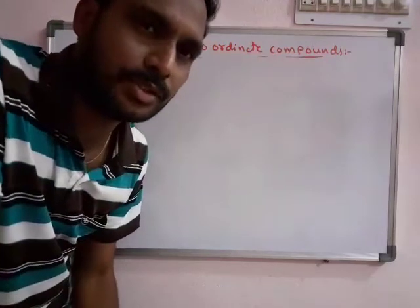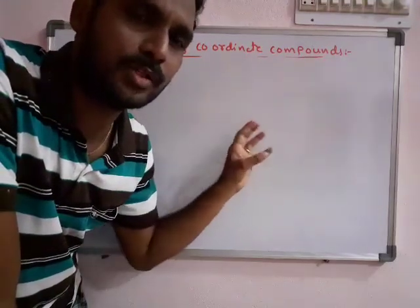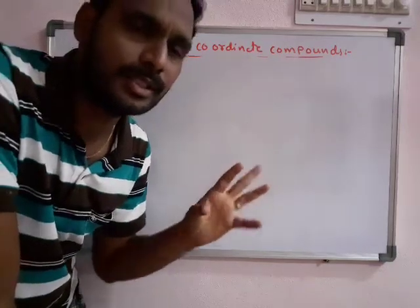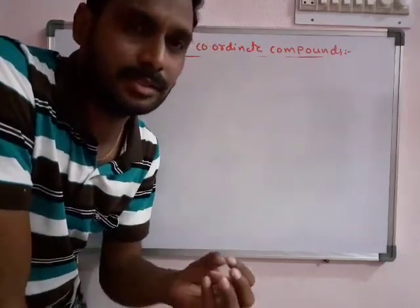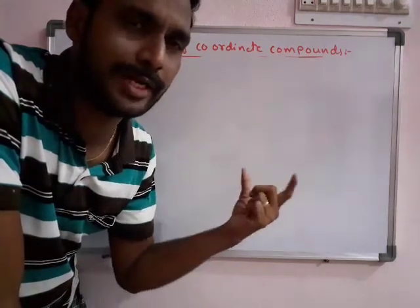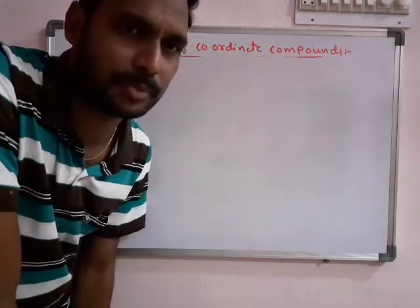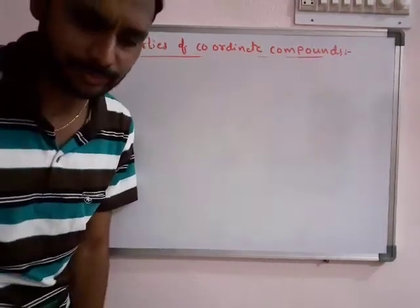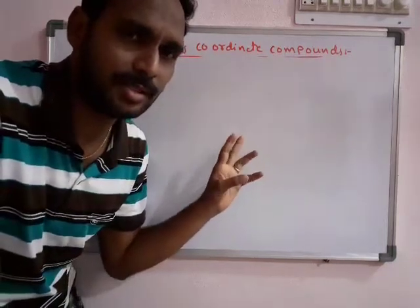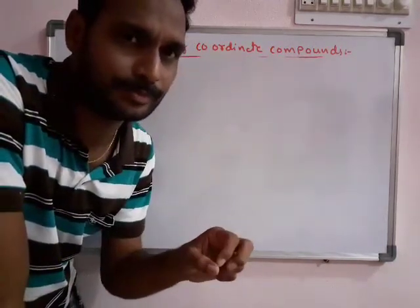Today we discuss the properties of coordinate compounds. Coordinate compounds are compounds which have a coordinate bond, also known as coordinate covalent compounds. The coordinate covalent bond is treated as a semi-polar bond.